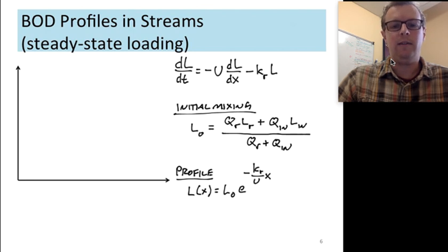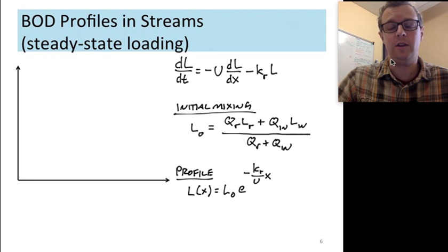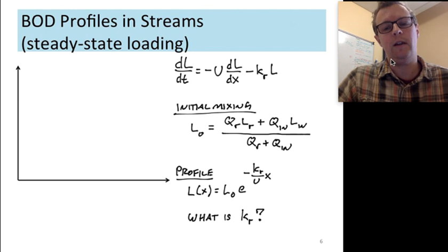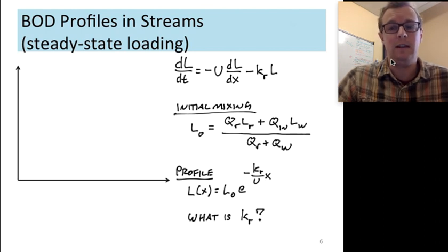And if you wanted to solve that for a steady state profile downstream of a point source, the same format we used applies from our previous lectures. All I've done is replaced concentrations with L's to make it specific for concentrations of BOD. And so if all of our old equations work, we're really only left with one question, which is what happens to BOD in the system? Or what do we use for that KR?